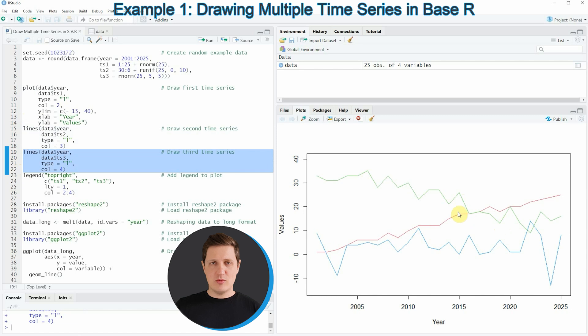At this point you can see that we are not really able to identify which of the lines is corresponding to which time series. For that reason I'm also adding a legend to our plot by applying the legend function as you can see in lines 23 to 26 of the code. If you run these lines of code you can see that at the top right of our plot a new legend is added which is identifying the different time series objects in our plot.